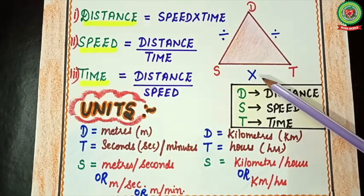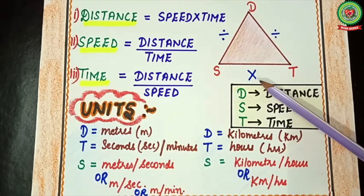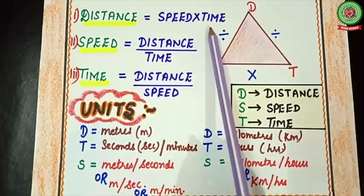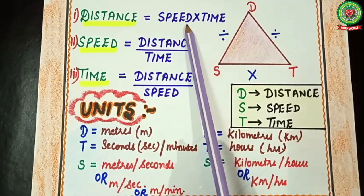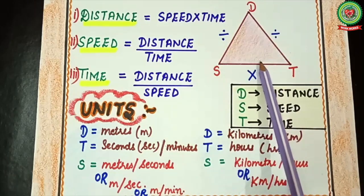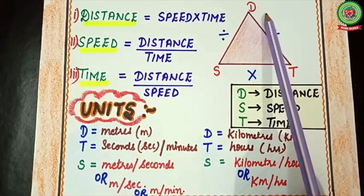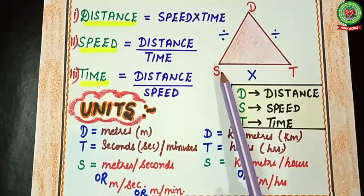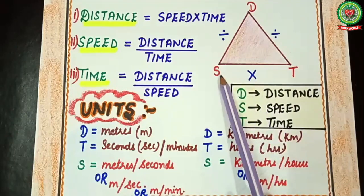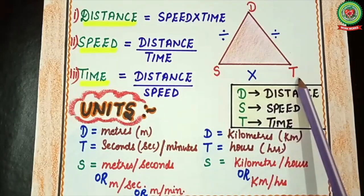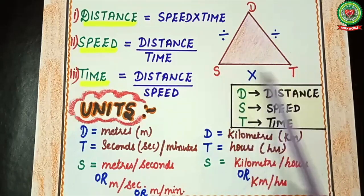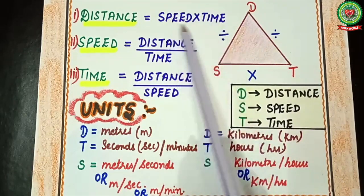First of all we will make the formula for distance. Distance is equal to speed multiplied by time. How do we get this from the triangle? Opposite to D, what is written is S and T with a multiply sign — so S multiplied by T. S means speed, T means time, so distance equals speed multiplied by time.